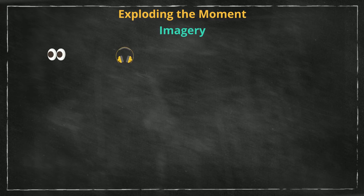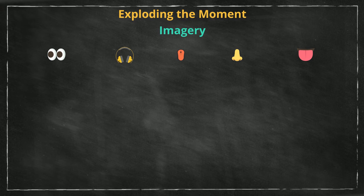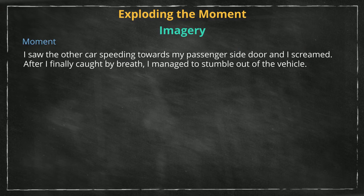As you may remember, imagery appeals to the five senses: sight, sound, touch, smell, and taste. These help readers to see and feel what is going on in a story and give the reader the impression that they are in the middle of the action. Here is a look at the exact same moment from earlier, exploded with the use of imagery.